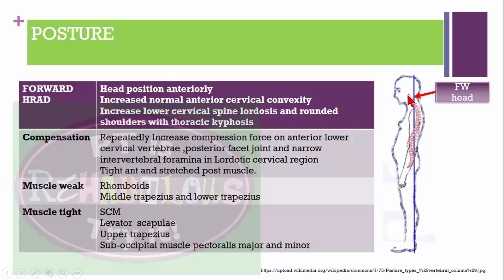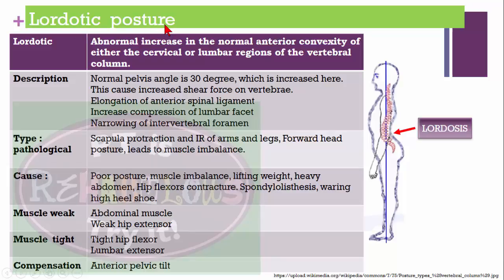Upper cross syndrome occurs in forward head posture. The weak muscles are the rhomboids, middle trapezius, and lower trapezius. The tight muscles are the sternocleidomastoid, levator scapulae, upper trapezius, suboccipital muscles, and pectoralis major and minor.